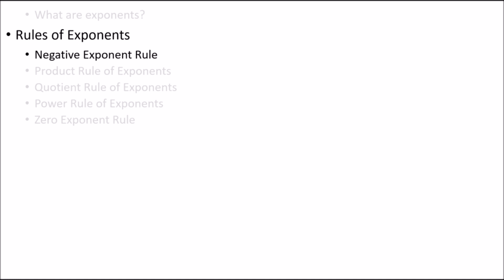Here's an example of a base with a negative exponent. This arrow points to the negative exponent, so what do negative exponents mean anyway? For example here, we can't multiply 2 by itself negative 3 times — that doesn't make any sense. Clearly, it would be nice if we could find a way to change negative exponents into positive exponents. That way, we'll be able to think about them more clearly, and thus was born the negative exponent rule.